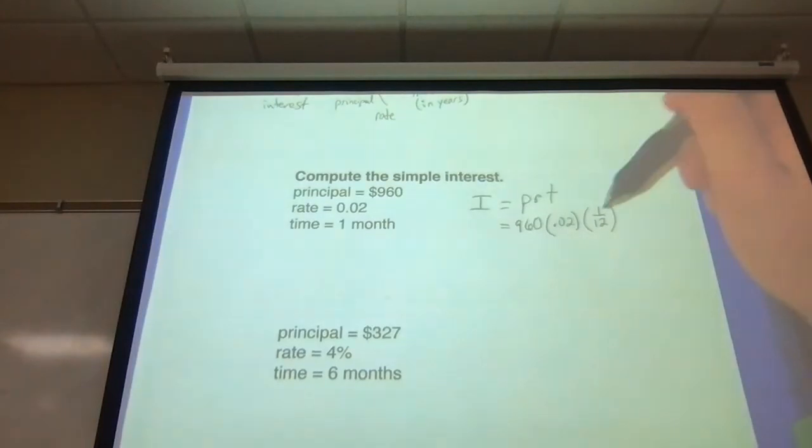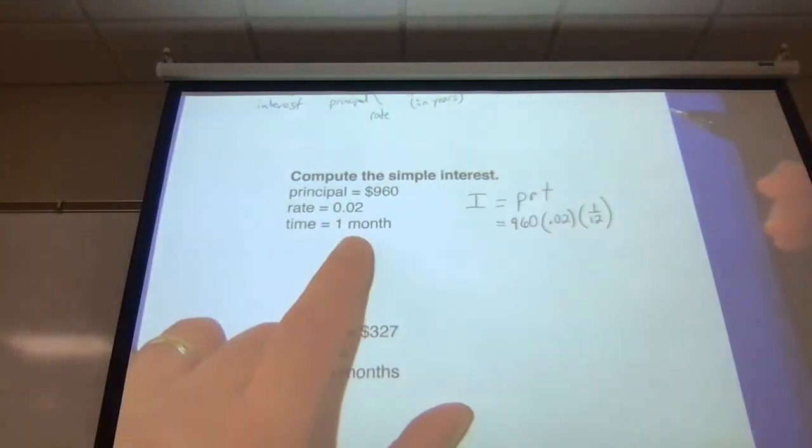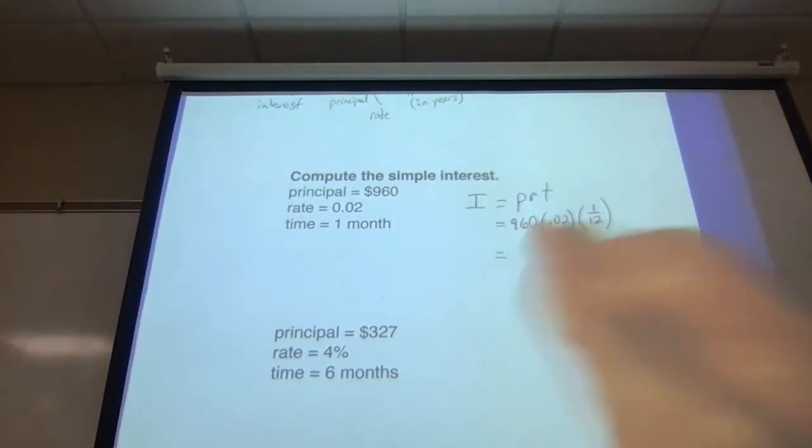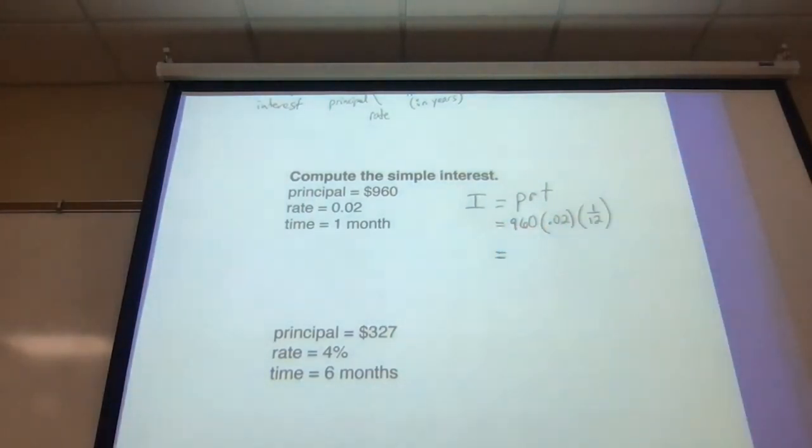And if there's any mistake you're going to make in here, that's usually it. So if they give you months for your time, you have to put that as a fraction over 12. Now you just have to put this in the calculator. That's going to compute your interest rate. So you take 960 times .02 times 1/12.